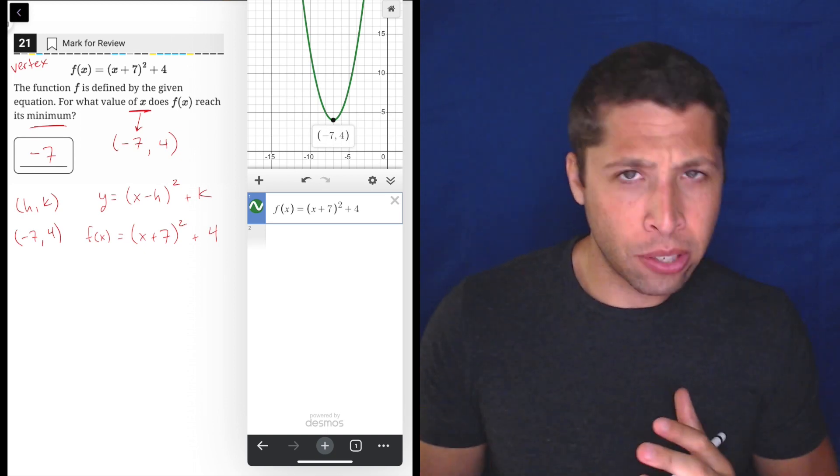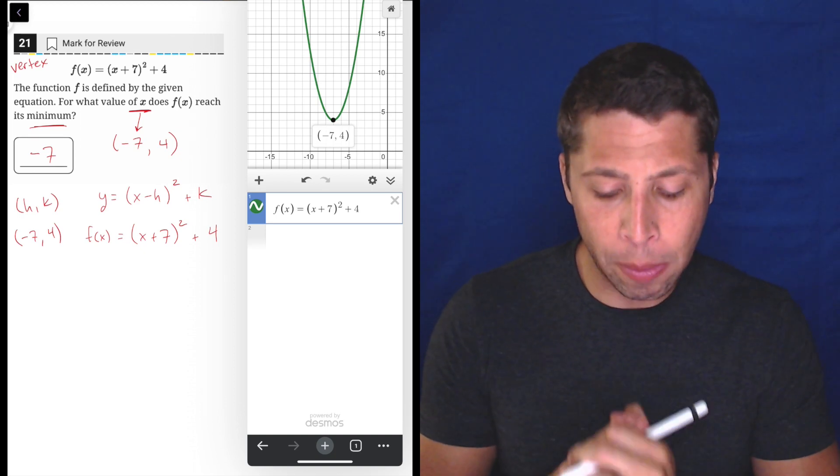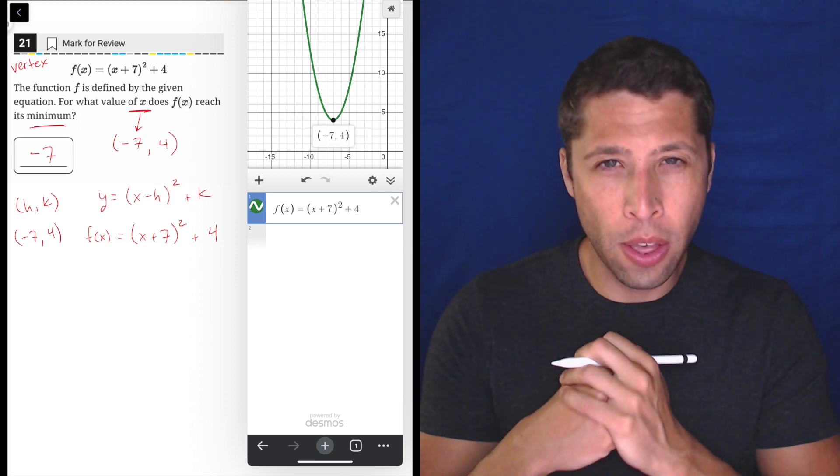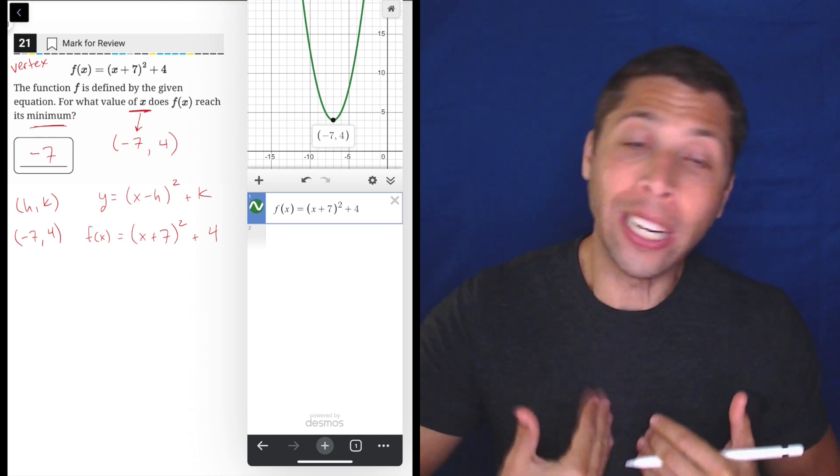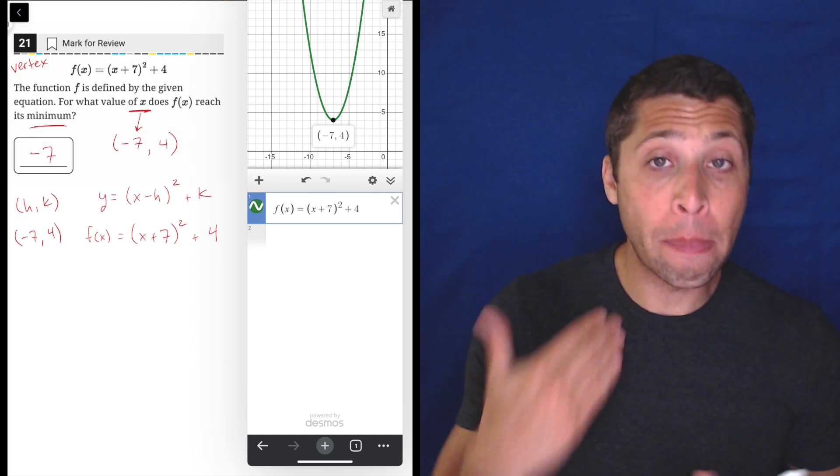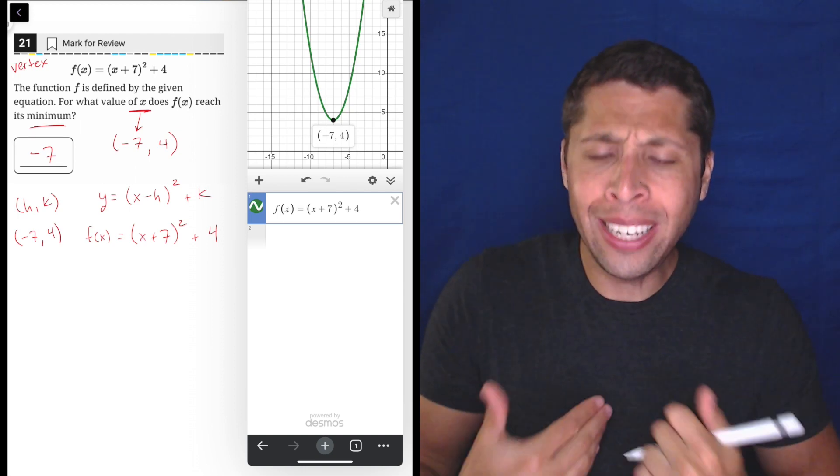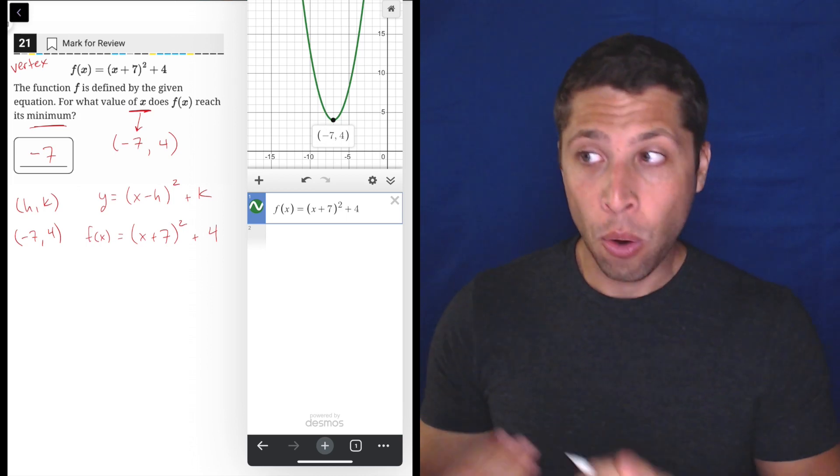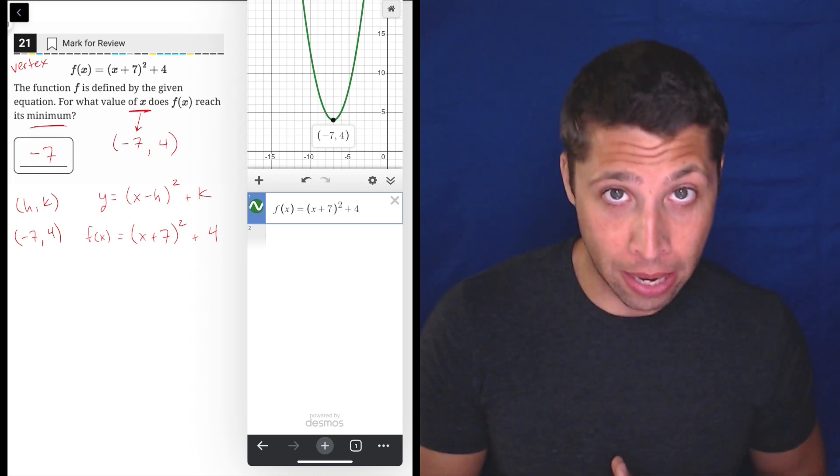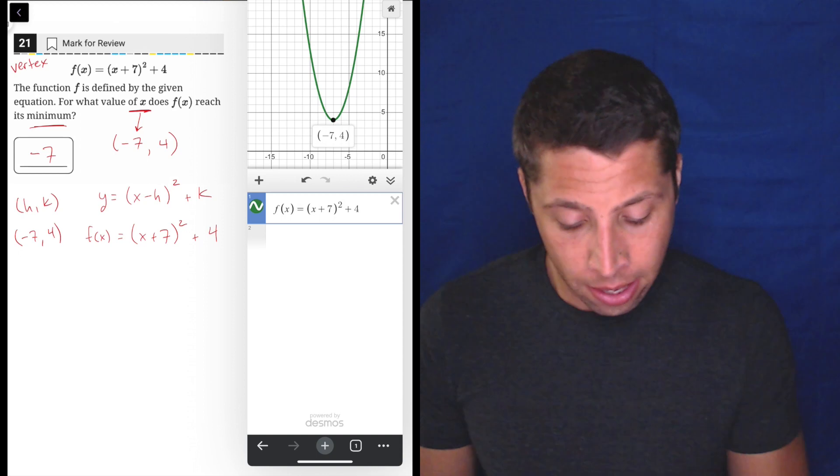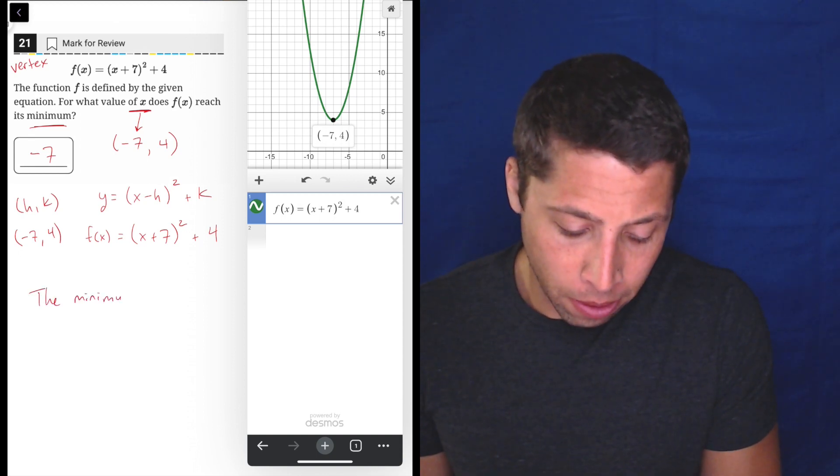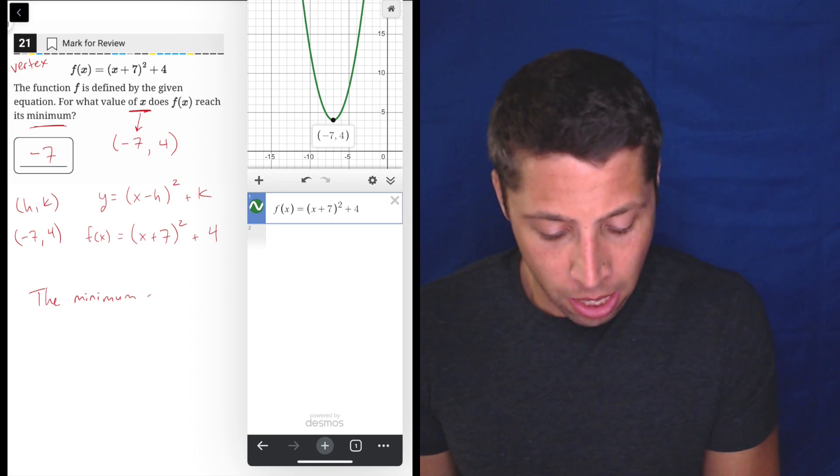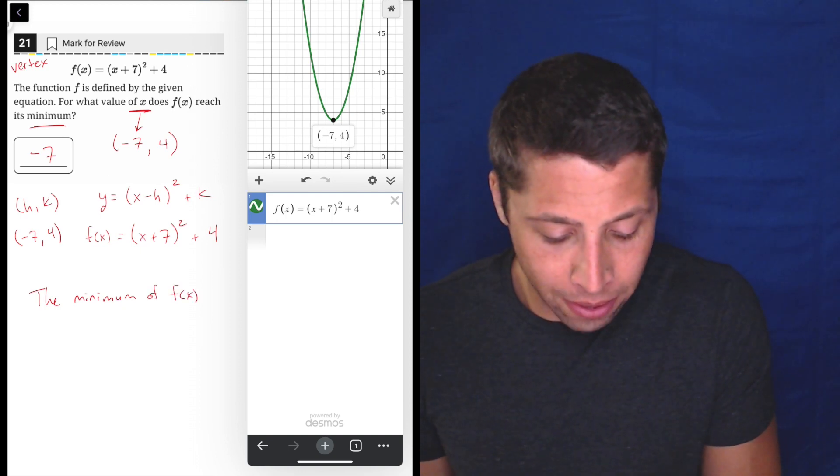The key piece here, and I want to be really clear about the language, is that they're asking for something that's a little different than I think what your instinct is going to want to provide. When we talk about maximums and minimums, our instinct is to say, what is the maximum? What is the minimum? Right? So in this case, the minimum of f(x) is four.